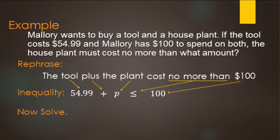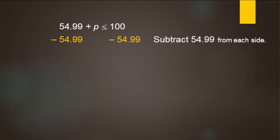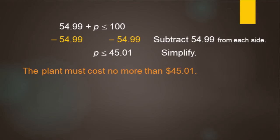Now we need to solve. So when we go to solve these, we're going to basically treat these just like equal signs. There is an exception. We'll talk about that for just a second at the end of the video here. So we want to get the P by itself because that's what we're solving for. So we want to undo this plus $54.99. So we're going to subtract $54.99 to both sides. So that's what that looks like. We're subtracting $54.99 from both sides. So we have zero $54.99s, just the P on this side. And then for this side here, we're going to do $100 minus $54.99. And that makes $45.01. So now we know that the plant must cost no more than $45.01.